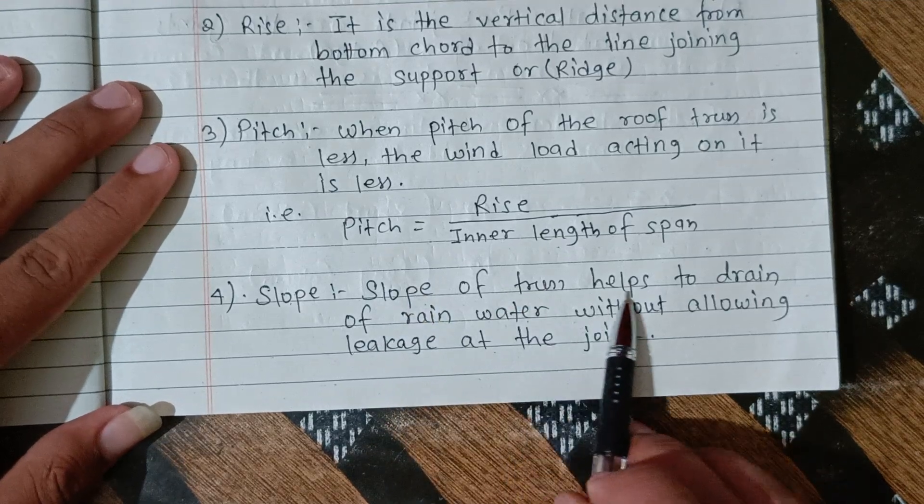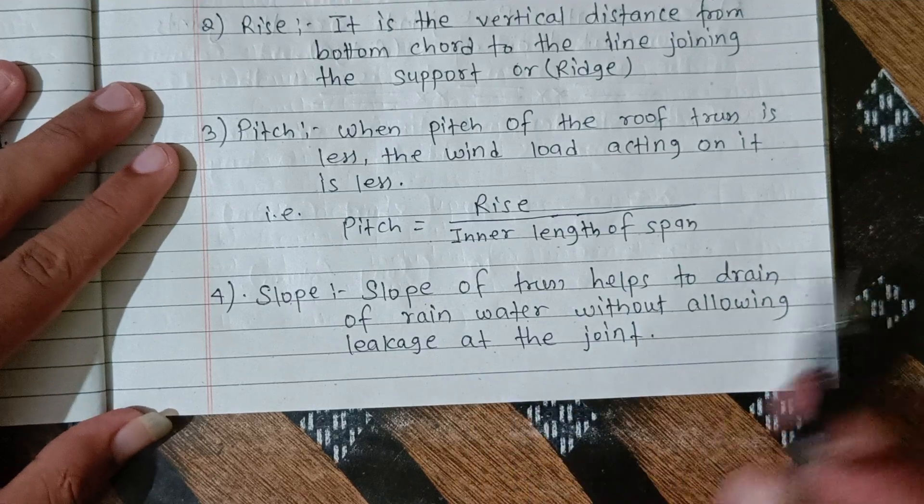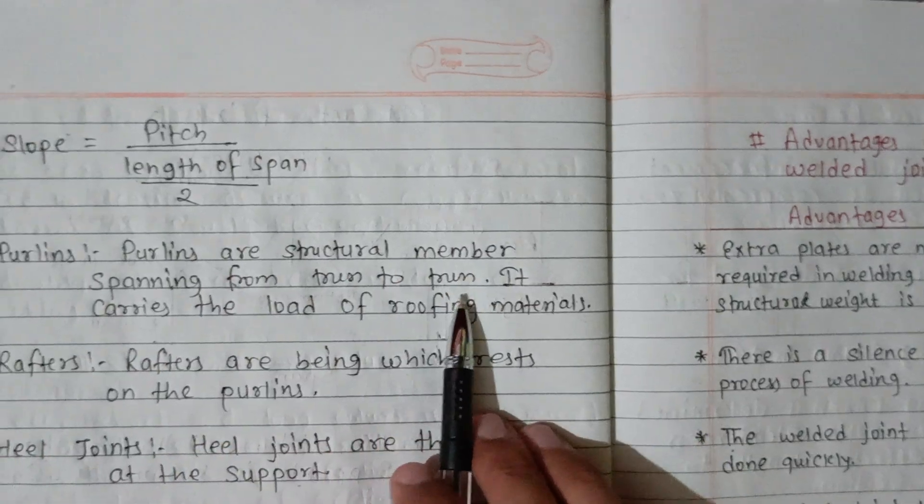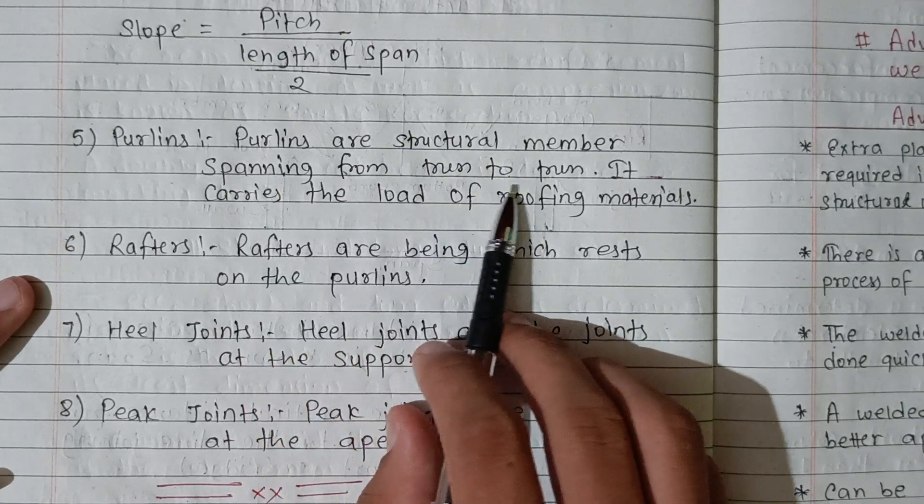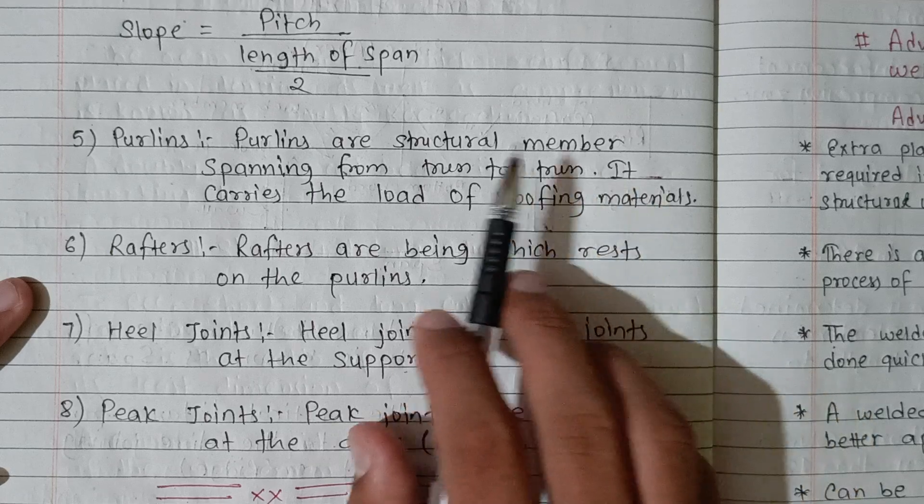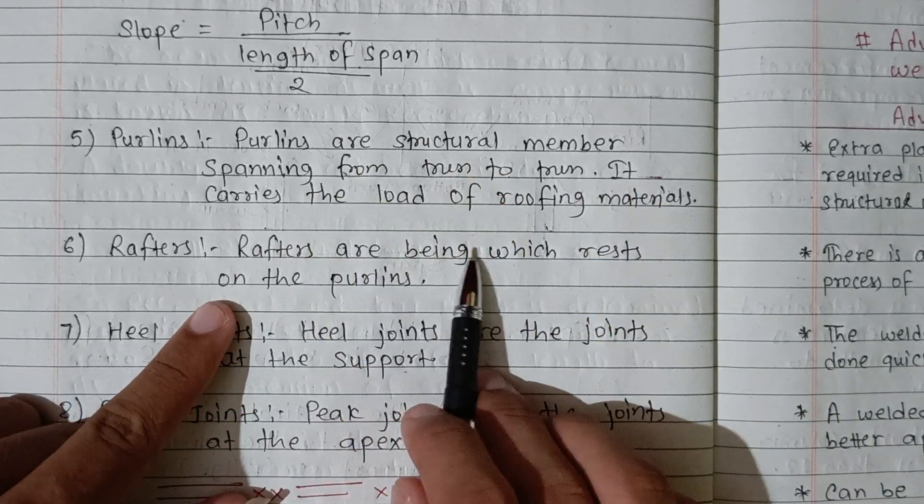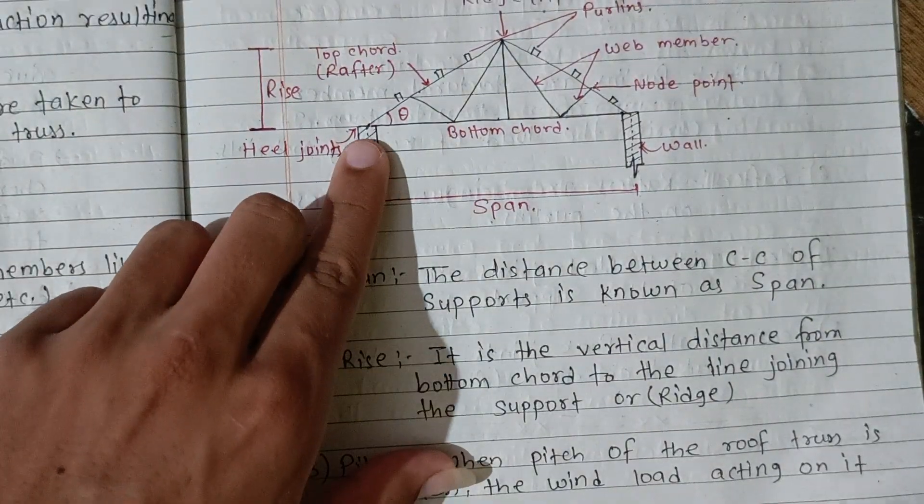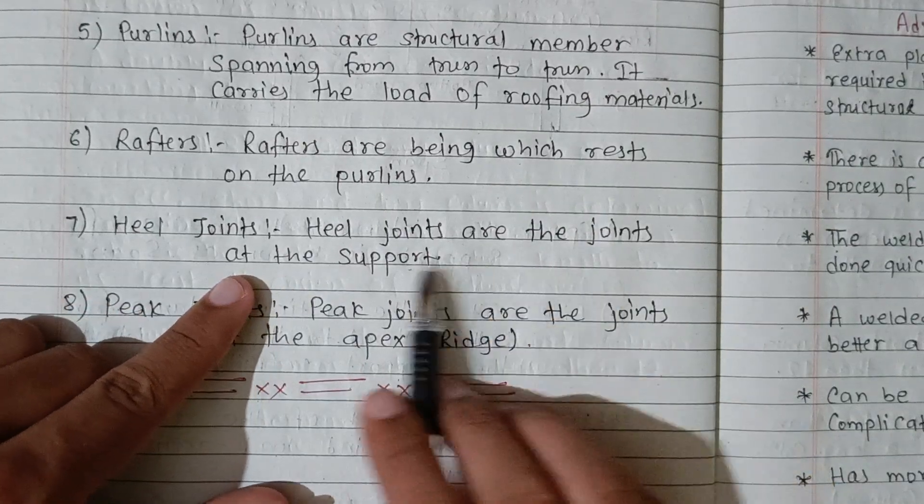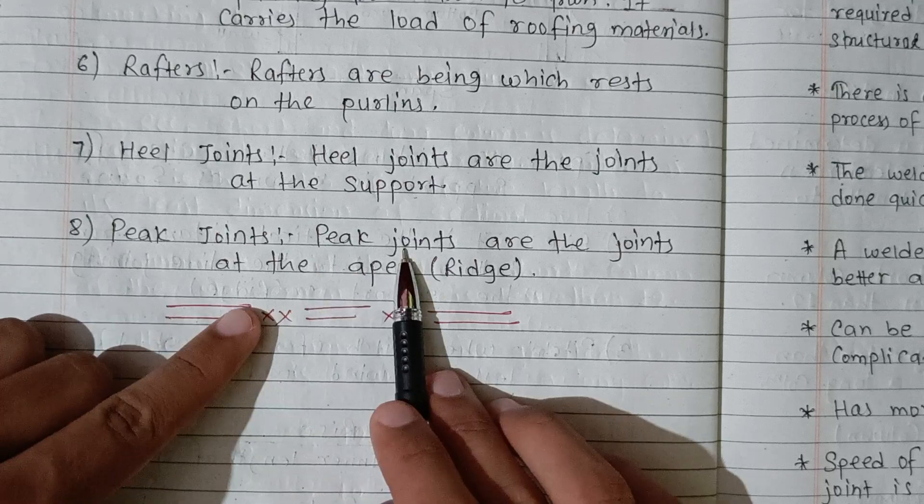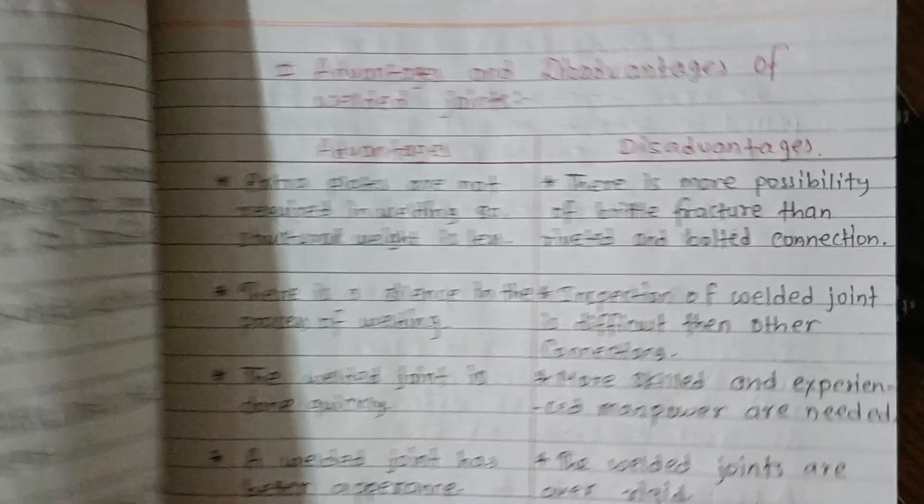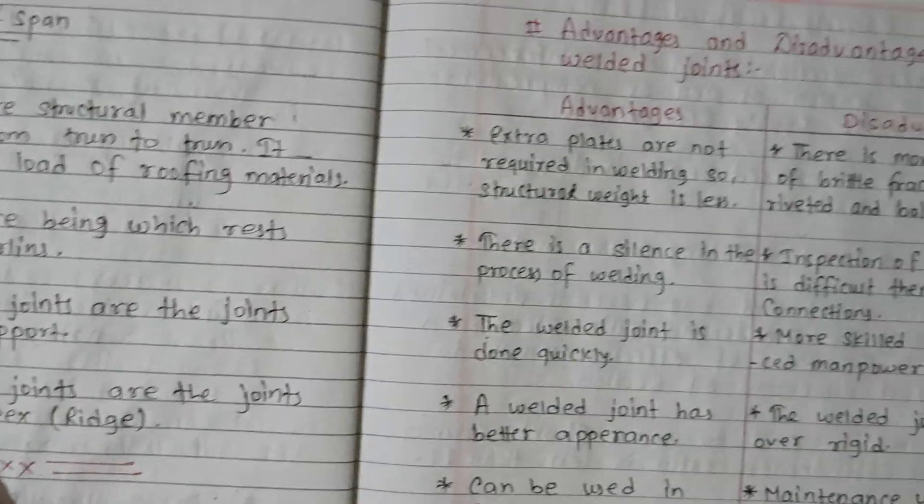Slope of the truss to drain the water without allowing leakage at the joint. Slope = pitch / (length of span/2). Purlin: structural member spanning from truss to truss. It carries the load of roofing material. The purlins rest on the top chord at the joint or at the support.